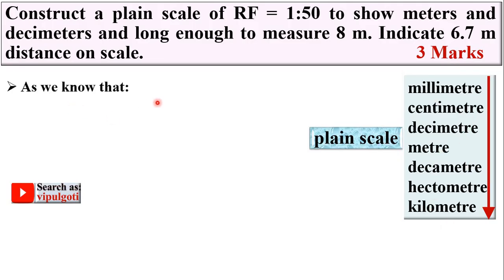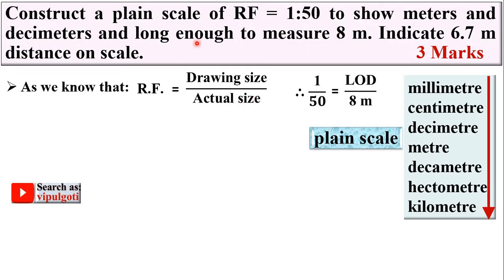As we know that RF equals drawing size upon actual size, and here RF is given to you. I can put the value RF equals 1 by 50 equals LOD, length of drawing, upon actual size. Here you can see the scale should be long enough to measure 8 meters, that means actual size of the object is 8 meters.